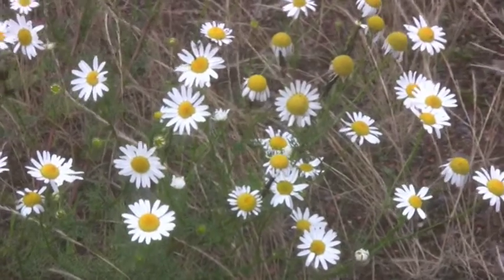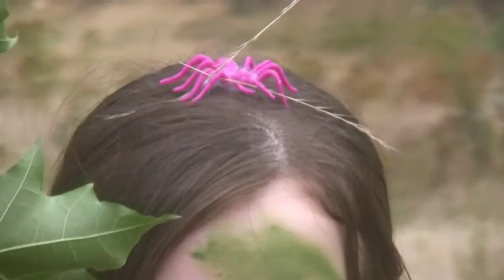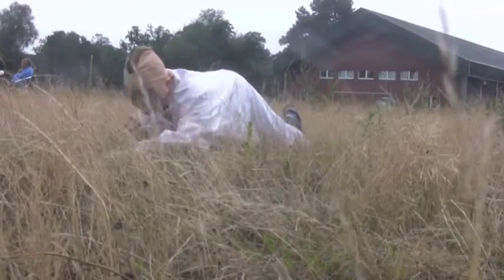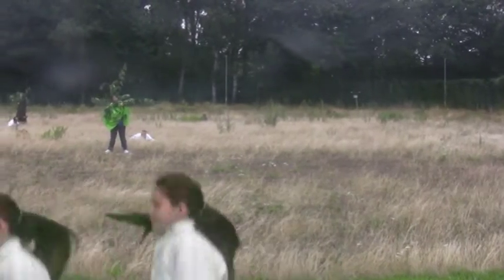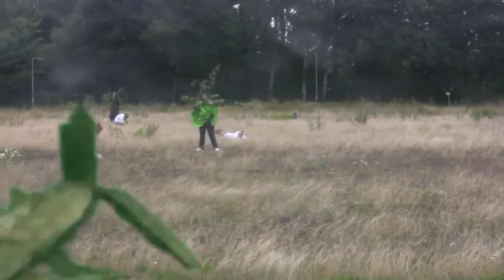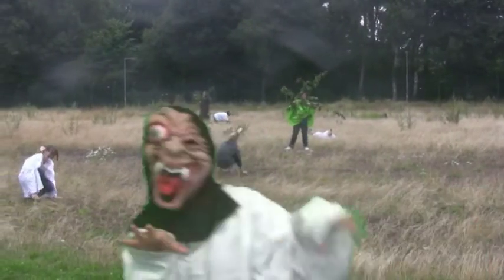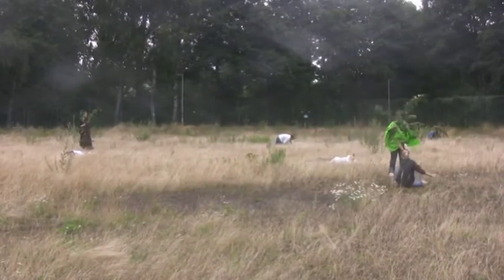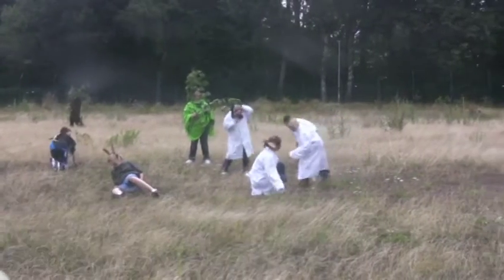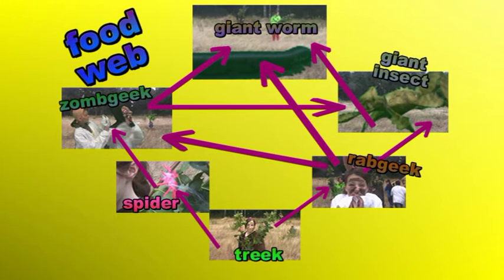I think I can make a food web for my world. In my genetically engineered land, it's not just the Rabgeeks that eat the Treeks, but also a genetically altered species of pink spider. And the Zomgeeks don't just limit themselves to Rabgeeks either — they too will eat the pink spiders. As for the Rabgeeks, it's even worse: they are eaten by the giant insects, and are also eaten by the Zomgeeks, and at the top they're also eaten by the giant killer worms, who incidentally eat the Zomgeeks and the Rabgeeks. And I forgot to mention that the giant insects eat the Zomgeeks as well. But if I put all this information into a food web, it makes it all much clearer.